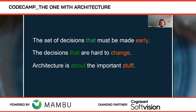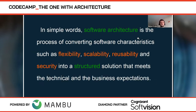I believe the most important is actually your domain model and the business rules of the application, and not necessarily the frameworks you are going to use. To give a reasonable definition of software architecture, I would say it is the process of converting software characteristics such as flexibility, scalability, usability, and security into a structured solution that meets the technical and business expectations. That's kind of generic, but I think everyone agrees with this definition.